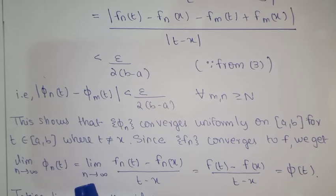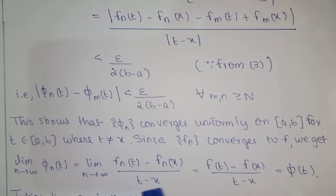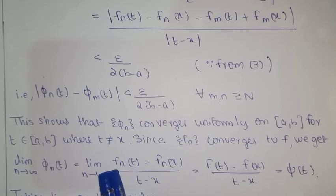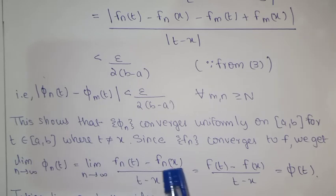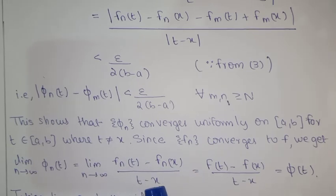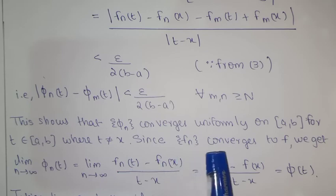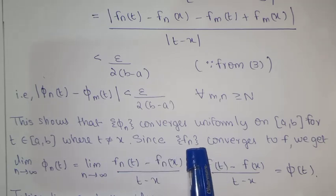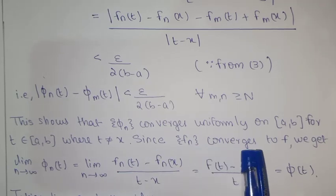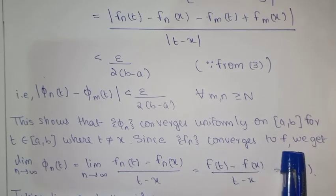The limit φ(t) = lim(n→∞) φn(t) = lim(n→∞) (fn(t) - fn(x)) / (t - x). Since the sequence fn converges to f, as n → ∞, fn(t) → f(t) and fn(x) → f(x), giving φ(t) = (f(t) - f(x)) / (t - x).